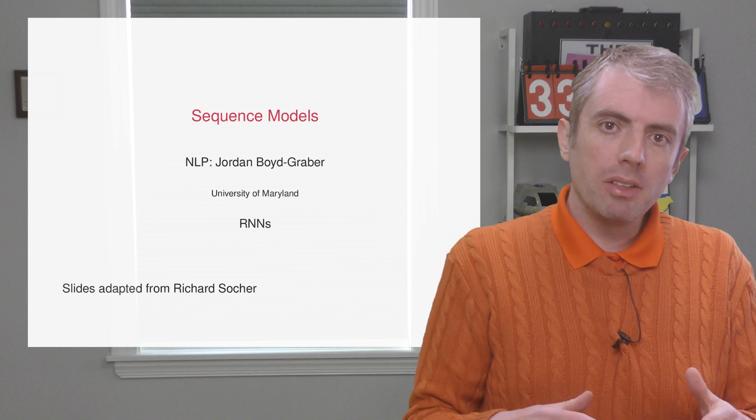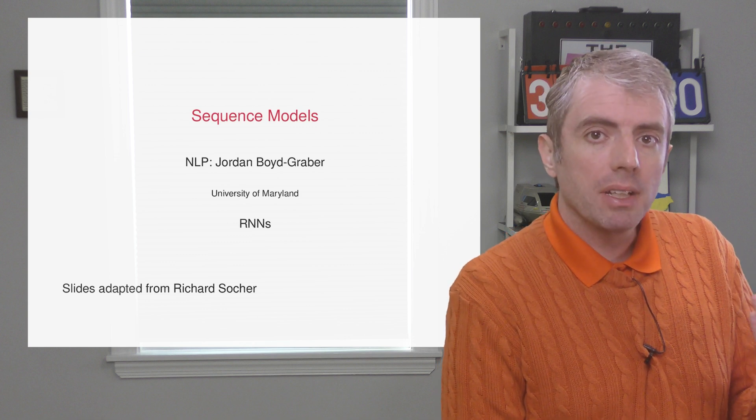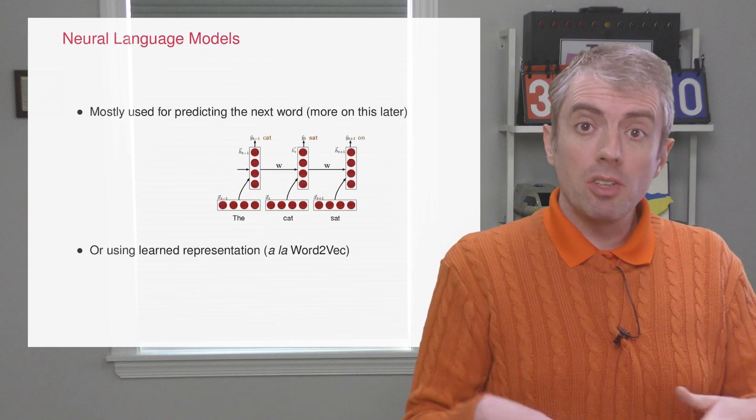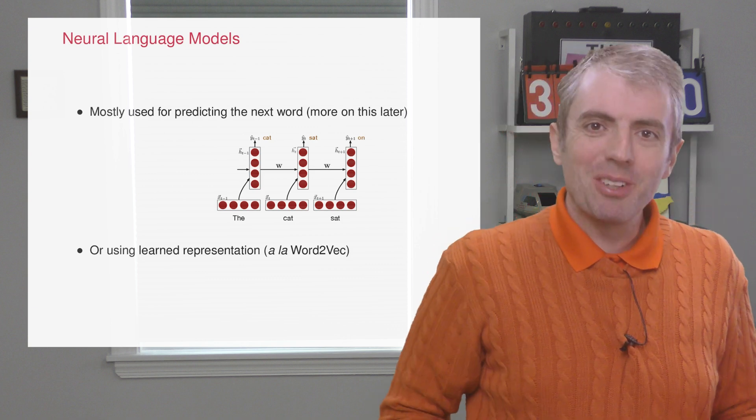In language modeling, you have some prefix or context, and you need to predict the next word. In representation learning, you just want to turn a bunch of text into a vector. We'll talk more about language modeling soon.